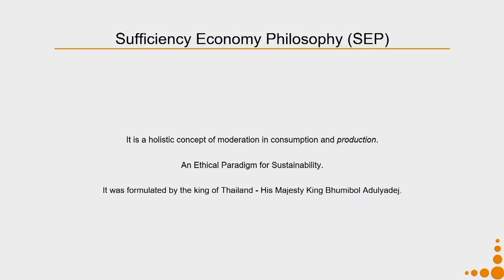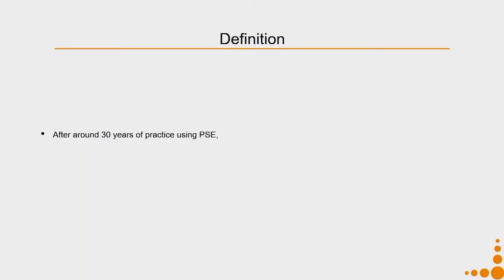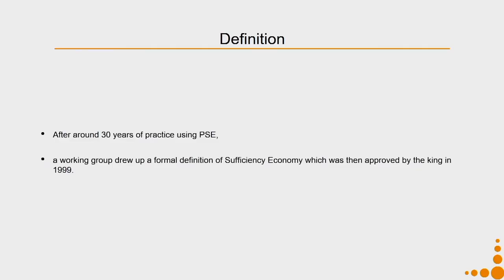This philosophy was formulated by the king of Thailand, His Majesty King Bhumibol Adhulyadej. Work on this particular philosophy had started way back in the 1960s, where the king, through various experiments and deliberations with different communities, started imbibing into the nation the principles of sufficiency economy. A formal definition was actually coined by a working group and then approved by the king in 1999.